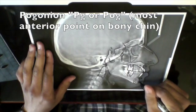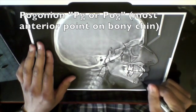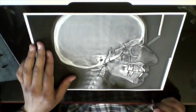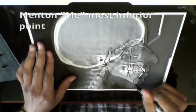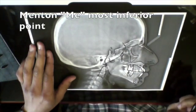Mark pogonion, which is the anterior curvature of the bony chin. Mark menton, which is the inferior curvature of the bony chin. Gnathion is between pogonion and menton.